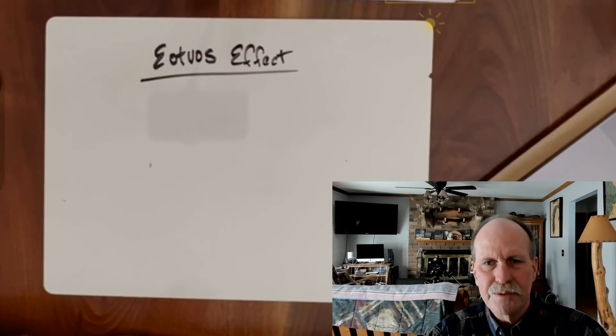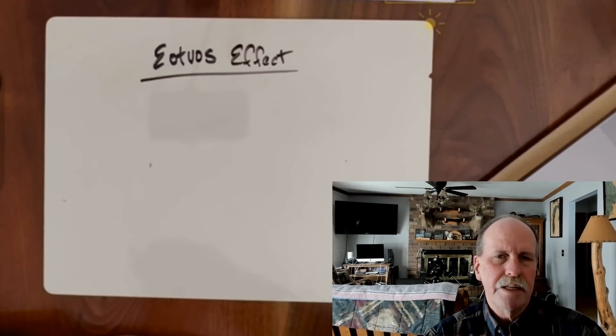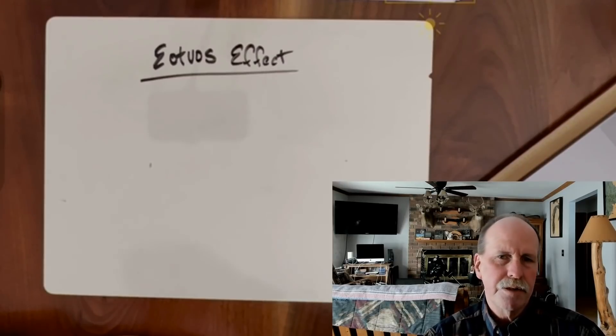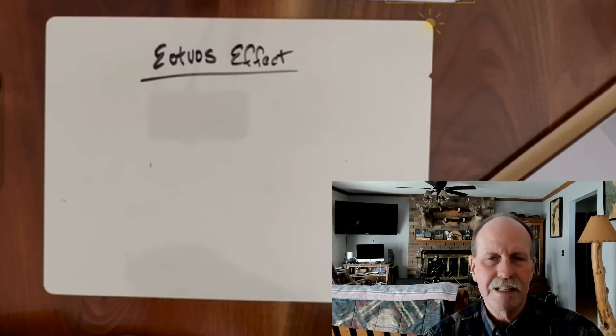Well, hi everyone and greetings from northern Michigan. This is Bob the Science Guy. I've got two special treats for you today. The first one is we're going to do a little science — we're going to learn about something called the Eötvös Effect.